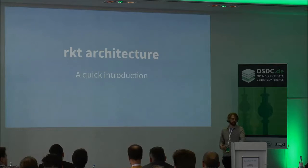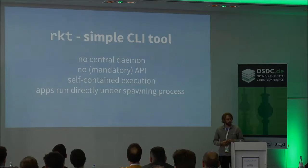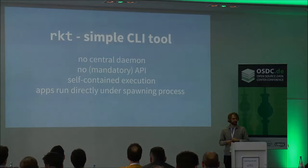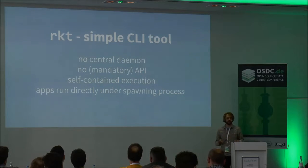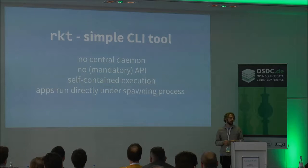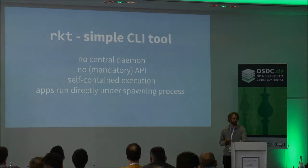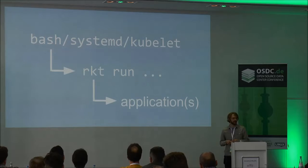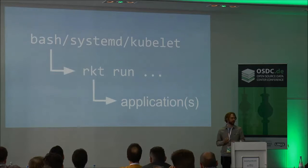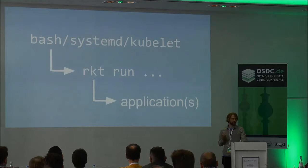Now I want to talk about the architecture of Rocket itself. Rocket is a simple composable tool — basically just a command line tool, RKT. The key architectural difference from Docker at the time was that there's no central daemon through which all containers are executed and no mandatory API — it's just a command line interface. There is an optional API which is quite new. Since every pod executes in a self-contained way, you get the nice effect of inheriting the environment from wherever you're executed. If you run the RKT command from the command line, from systemd, or from the kubelet, it directly inherits whatever parameters apply from that context.